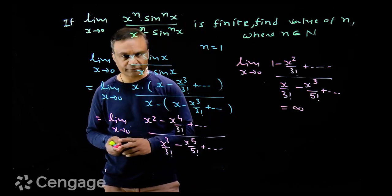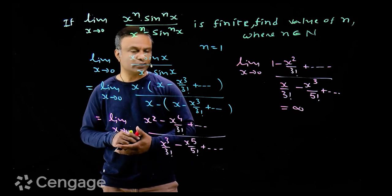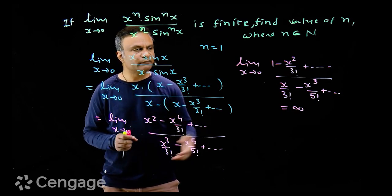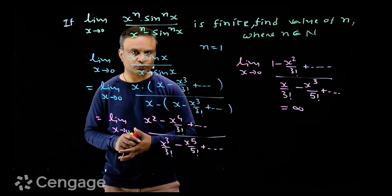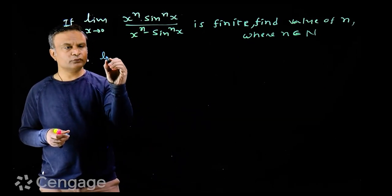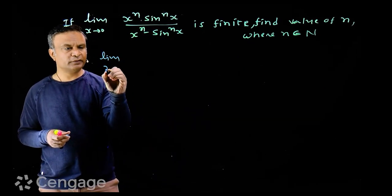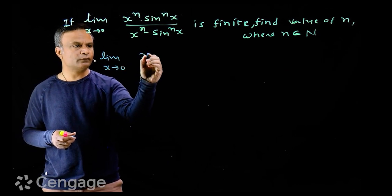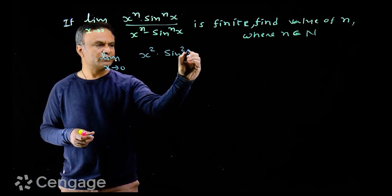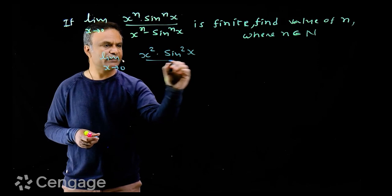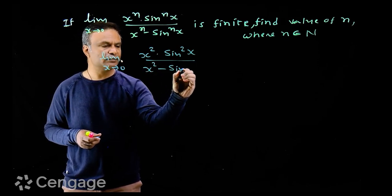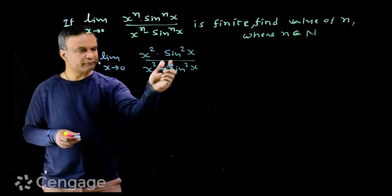When x tends to zero, the numerator tends to 1 but the denominator tends to zero, so this limiting value will be infinity. Since we want a finite limiting value, n is not equal to 1. We then try the next value, n = 2.